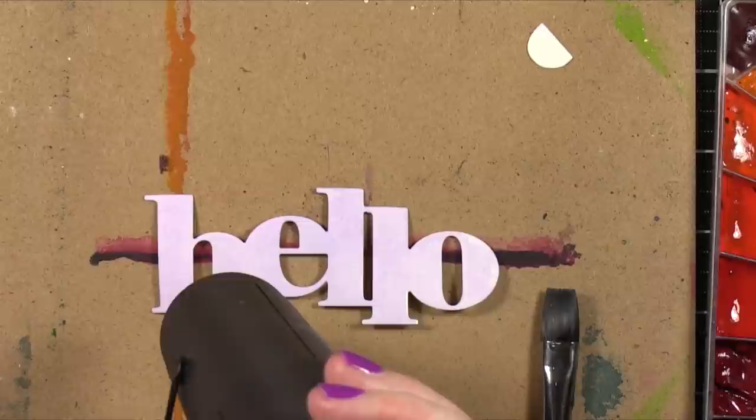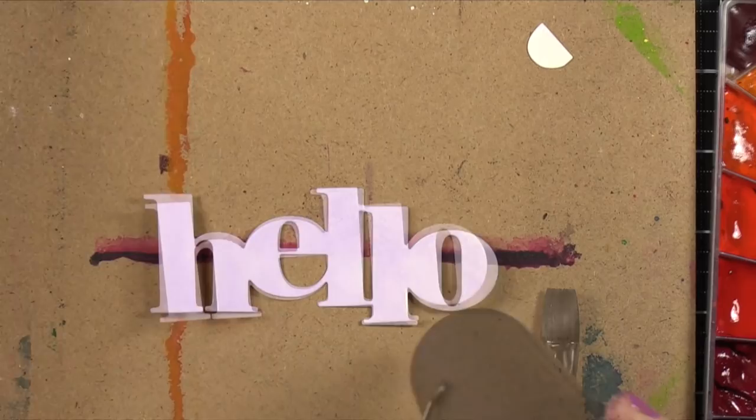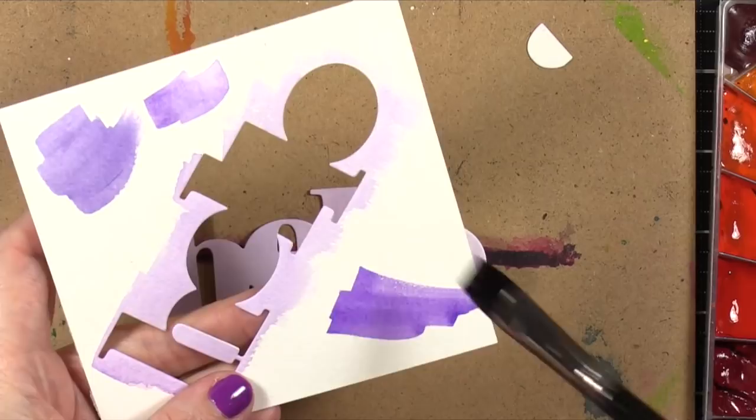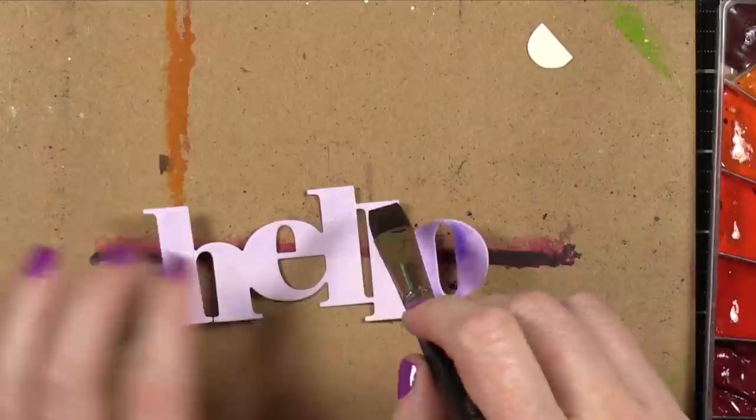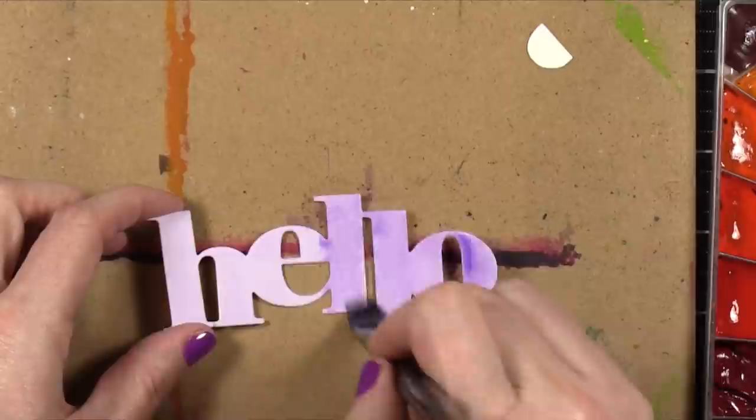I first did a very pale layer of watercolor. This is a purple shade from my Mijello Mission Gold palette. And I ended up doing two layers of this very pale purple because the first layer was a little bit too muted once it was dry. So I painted a second layer.